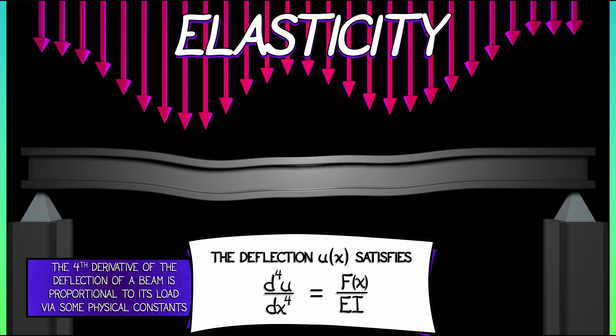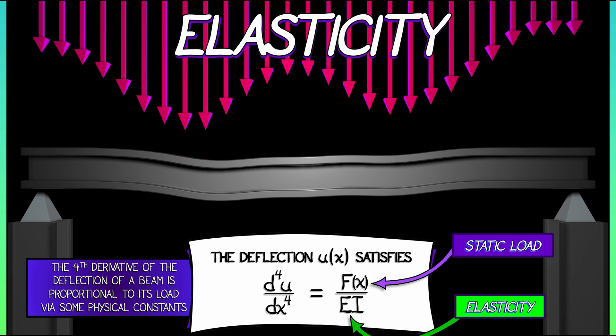So if the deflection is u as a function of position along the beam x, then the fourth derivative of u with respect to x is equal to the load f of x divided by two constants, e and i.